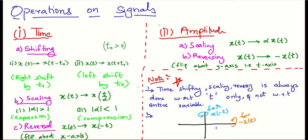We've seen all of this in the previous video, so let's just have a brief recap. What is time shifting operation? If x(t) is changed to x(t minus t0), it is said to be right shifted by t0, where t0 is greater than 0. And if x(t) is changed to x(t plus t0), it is said to be left shifted by t0.